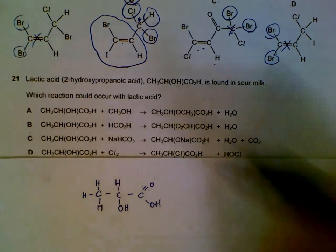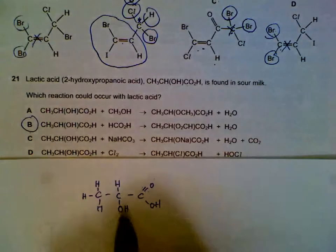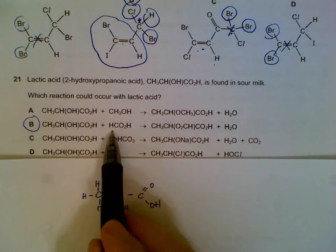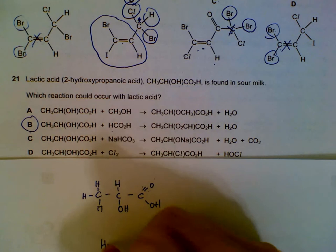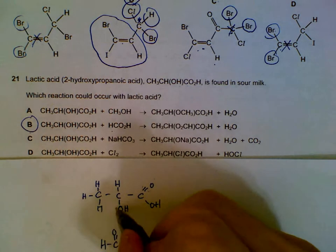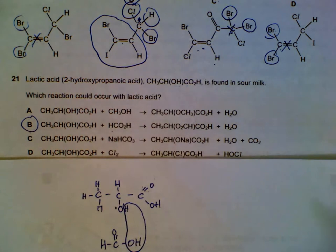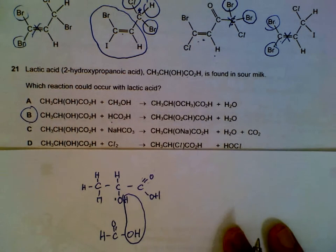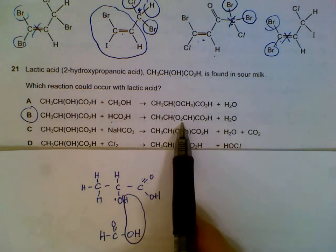The answer is B, where they say that the molecule is reacted with an acid. The methanoic acid will actually undergo esterification with the lactic acid here, and then you will produce this compound.